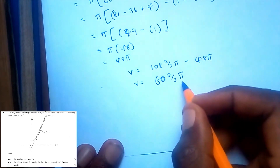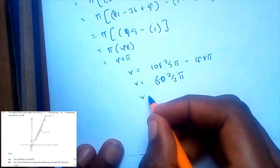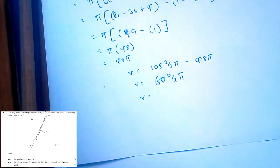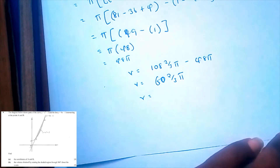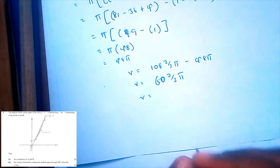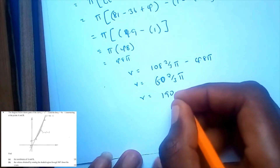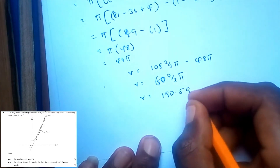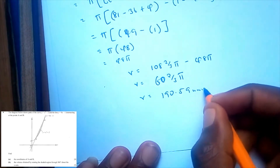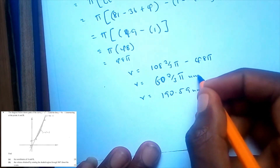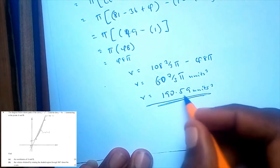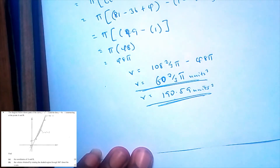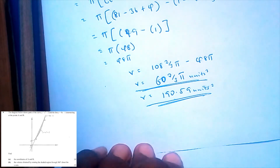You can leave the answer as 62 and 2 thirds times pi, or multiply through to get approximately 190.59 cubic units. You can either leave it in exact form or write it in decimal form. That concludes question 10.